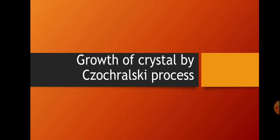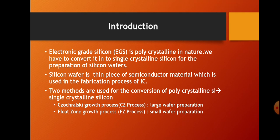Today we are going to discuss about growth of the crystal by the Czochralski process, that is the CZ process. In the previous class, we discussed about the preparation of electronic grade silicon or EGS. Electronic grade silicon is highly purified silicon and it is polycrystalline in nature. For the preparation of silicon wafers, we have to convert this polycrystalline silicon into single crystalline silicon. Silicon wafers are thin pieces of semiconductor material used in the fabrication of ICs.